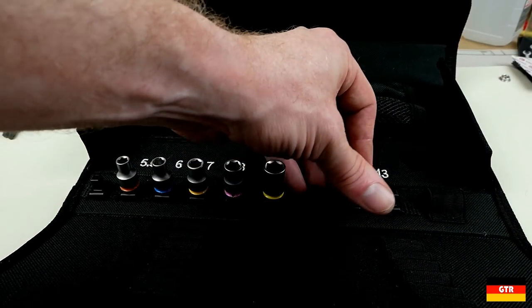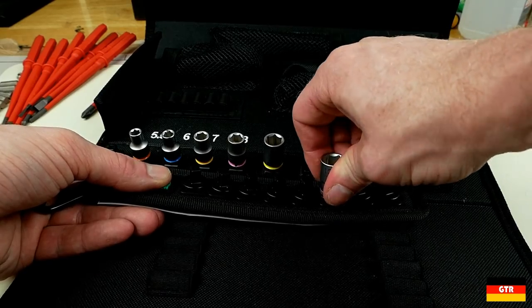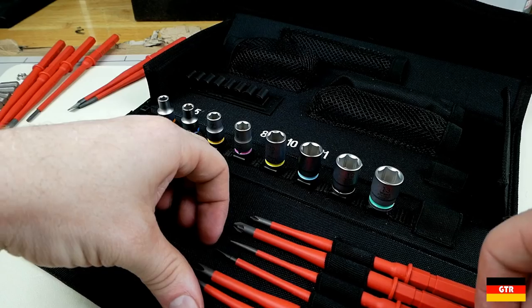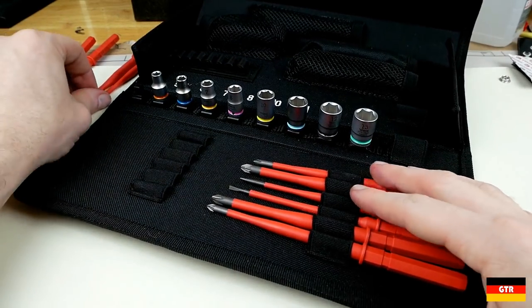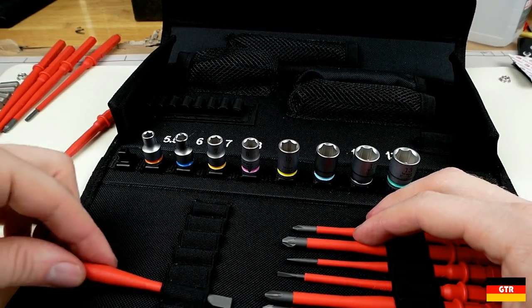On to the actual case itself. The socket holders are purely friction fit, and are not the newer twist style locks that they have come out with recently. The VDE blades are held in with some elastic loops and feel quite secure. Some are a bit tighter than others due to some differences in the shaft diameters, but they all fit very nicely.